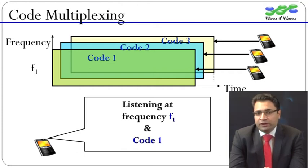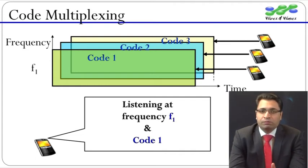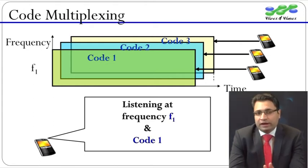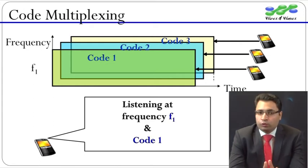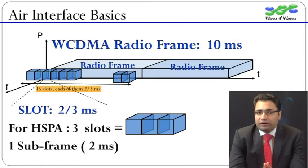In the example shown here, there are three users and they are simultaneously using the same frequency, but each user has its own code. They will not interfere with each other as long as their powers are controlled.